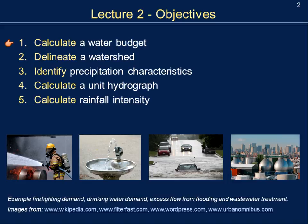So first what we're going to calculate is a water budget, then we're going to talk about delineating a watershed — and this is actually homework number one. Then we'll move on to identifying precipitation characteristics, we'll calculate a unit hydrograph and then project it into something larger than a one-inch hydrograph, and finally we're going to calculate rainfall intensity. We'll bring all of these elements together next week to calculate flow.